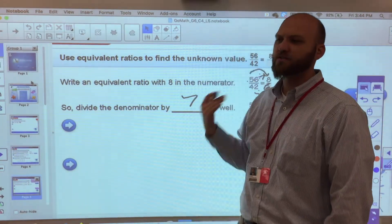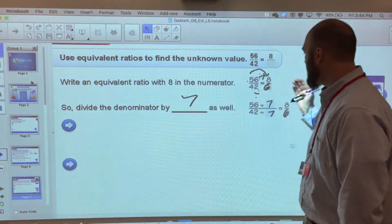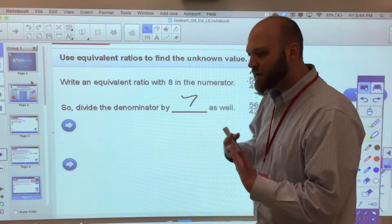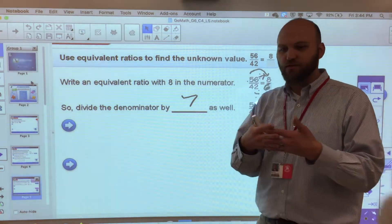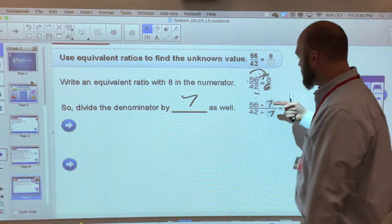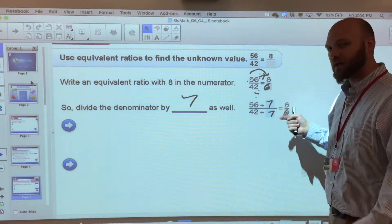Say I needed 3 adults to every 4 students and I have 56 students, well I would need 42 adults. So they're comparative, they're equivalent ratios, even though the numbers themselves have changed. The amount of one versus the amount of the other stays the same.